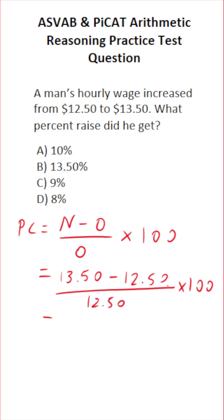$13.50 minus $12.50 is simply one. So this is one divided by $12.50 times 100.